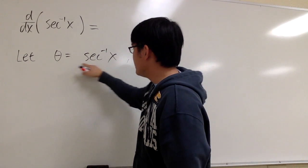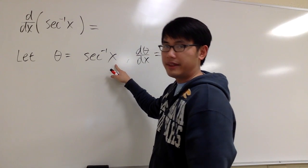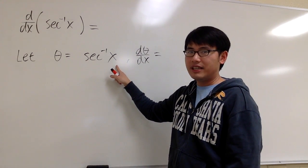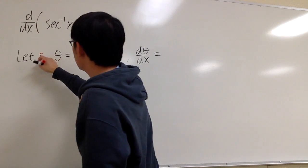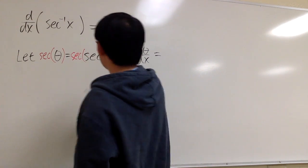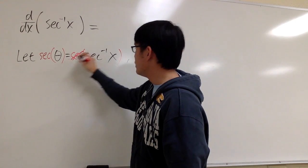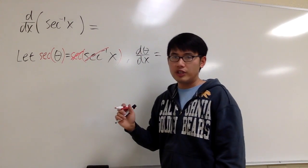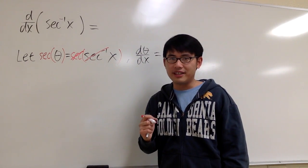And the advantage of using this equation right here is that we can now apply the original secant on both sides. So I can do that right here, apply the original secant on both sides. And this way, the original and the inverse, they cancel each other out. That's how we are going to make the connection.